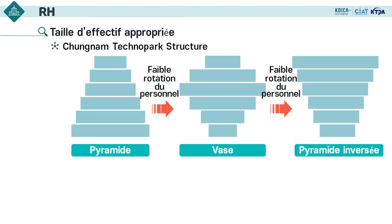Le sujet suivant est la taille d'effectifs appropriés. En général, la forme pyramide est la plus souhaitable. Mais avec le temps, elle change à la forme vase. Si la rotation du personnel reste faible, elle devient la pyramide inversée. Comme notre parc a été créé il y a plus de 20 ans, beaucoup de personnes ont été promues, mais le nombre d'employés qui attendent la promotion augmente aussi, conduisant à une organisation en forme vase.